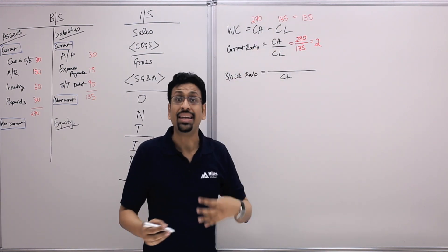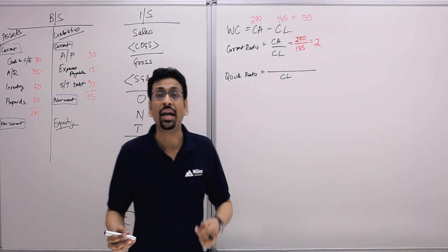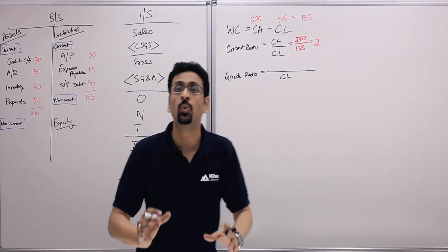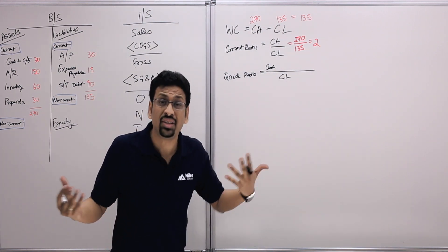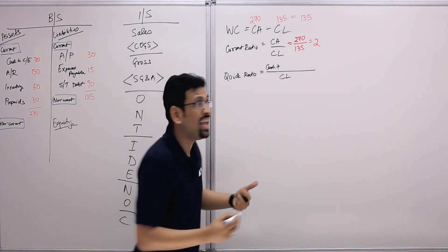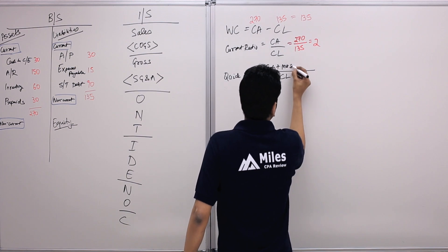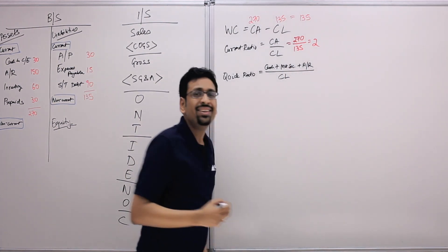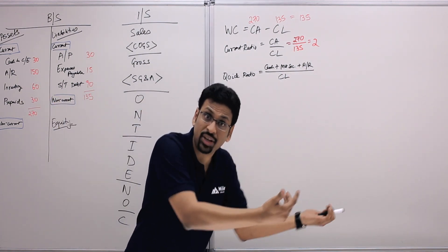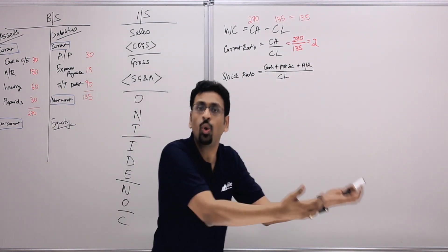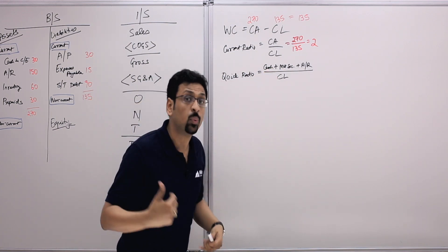Current assets are convertible to cash within one year, but in the quick ratio we look at those current assets which are very easily convertible to cash right now. Cash and cash equivalents are immediately liquid. Marketable securities can be sold the next day. Accounts receivable are also easily collectible. Inventory, however, requires two steps — first sell the inventory, then collect the cash.